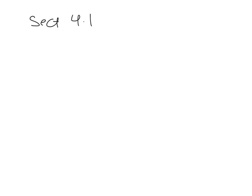We're working in intermediate algebra, section 4.1. If you're following along in the book, that starts on page 139. The topic is rational expressions, equations, and functions, and we're going to start with simplifying a rational expression. This is example 1 on page 139.